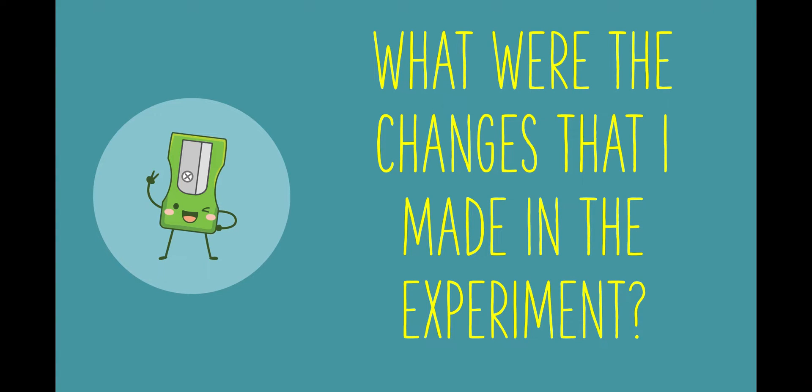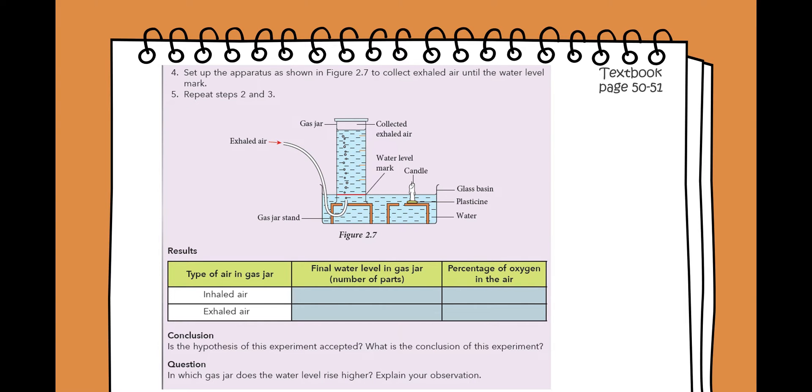If you notice, I made a few changes in the experiment. The first one is I changed the permanent marker with rubber bands. So instead of marking the gas jar with permanent marker, I used rubber bands and I divided the jar into 10 equal parts instead of five. Now let's record the observations. You may find the link for the handout in the description box down below.